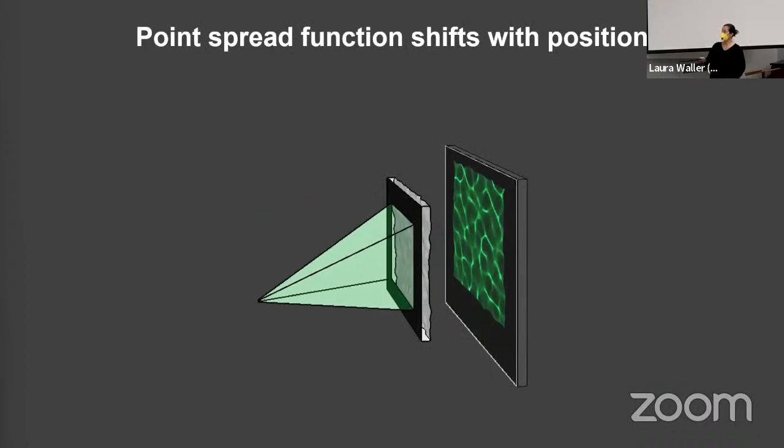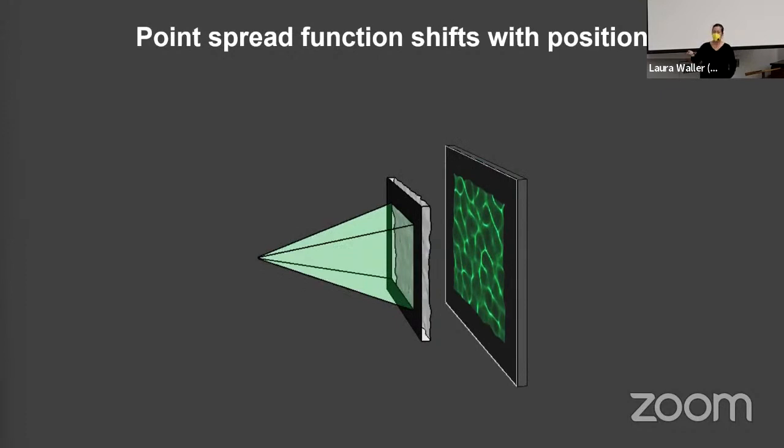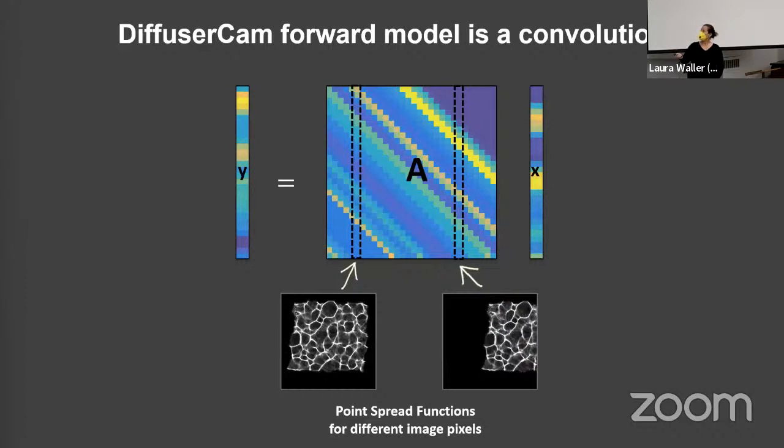A big part of it relies on this shift-invariant effect. If I have a point source in the world, as it moves laterally, this response of the system simply shifts. So it's a shift-invariant system. What does that mean about the matrix, that A matrix? It's a shift-invariant system, so the response is just a convolution. And so this A matrix is just the convolution matrix, meaning that every column of this A matrix is the same as all the other columns, just shifted by a different amount. So there's no need to go and measure a million different calibration images. Let's just take one with a point source in the far field. This we do by just putting your iPhone flashlight and holding it out away from the sensor.